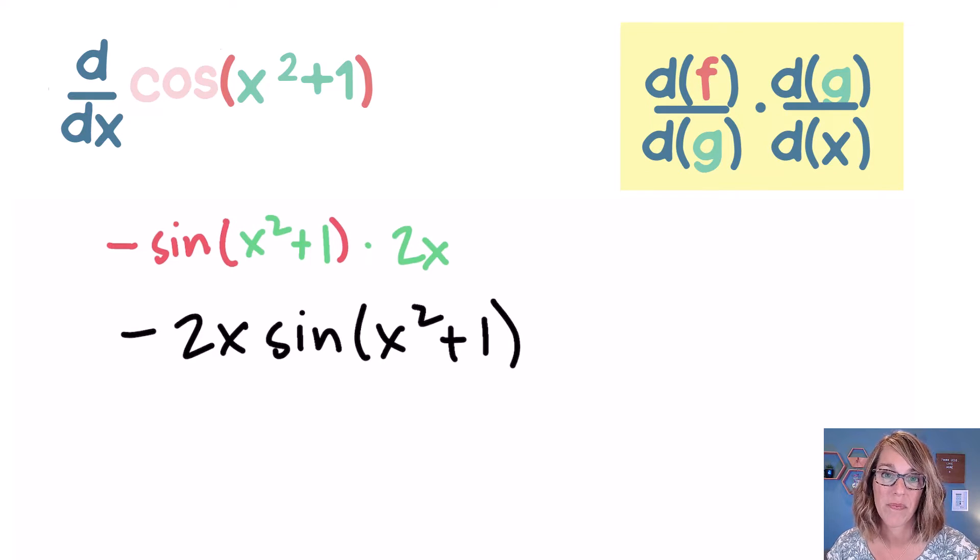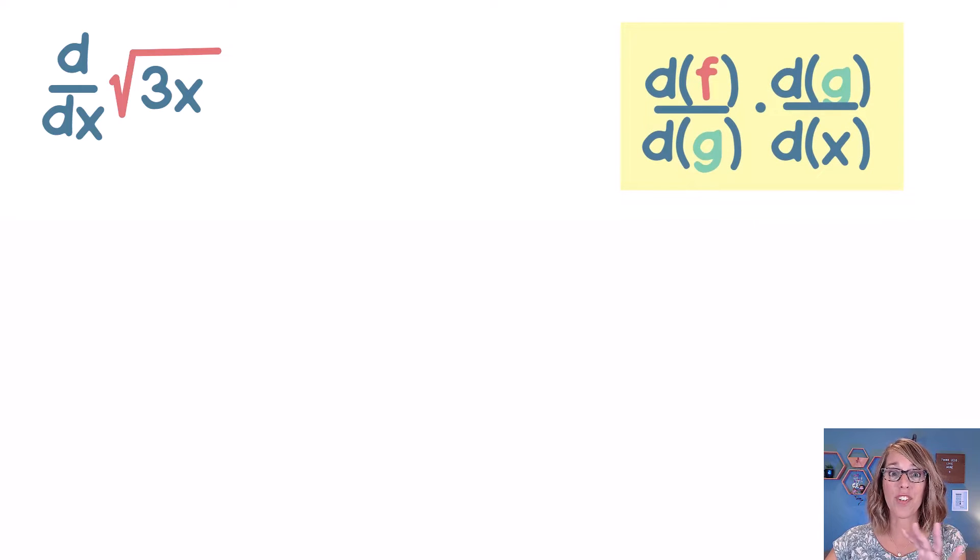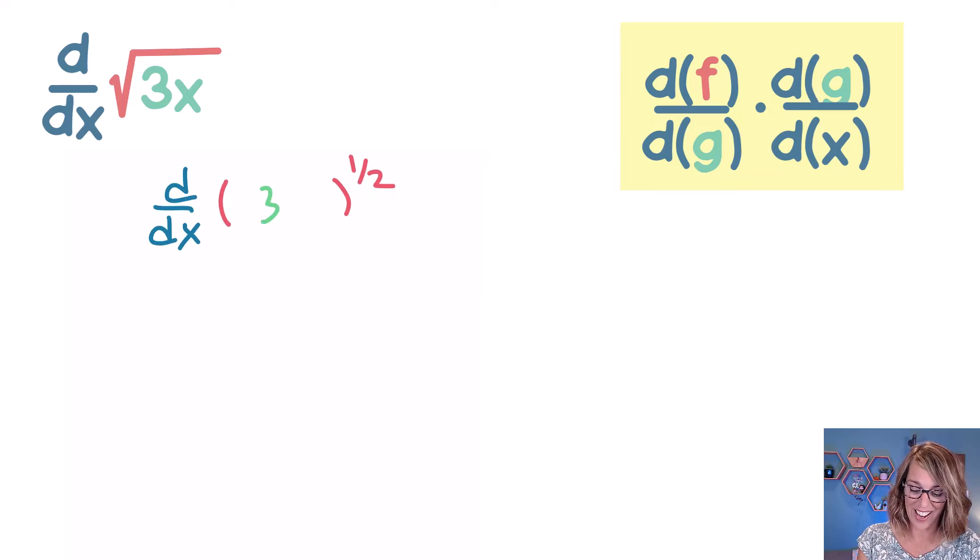Here comes the next one. Here I've got the square root of 3x. My outer function for the chain rule is that square root symbol which makes my inner function 3x. Now I really want that square root to be a one-half power instead. So instead of the square root I'm going to replace that with a one-half power on the outside and then my 3x on the inside.